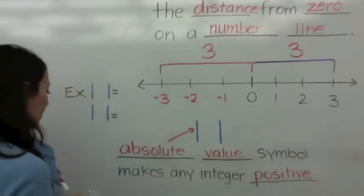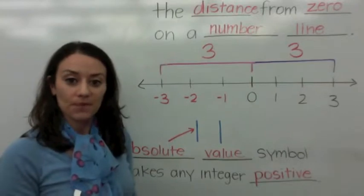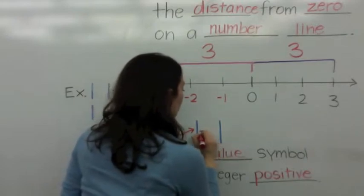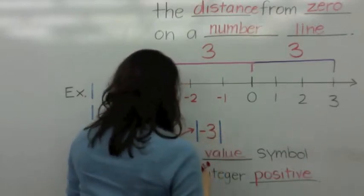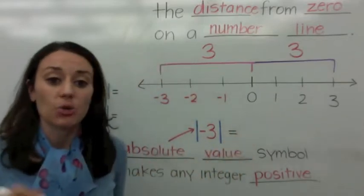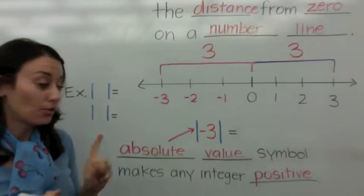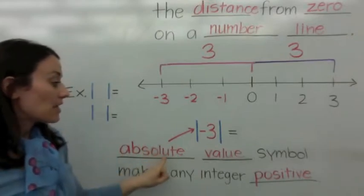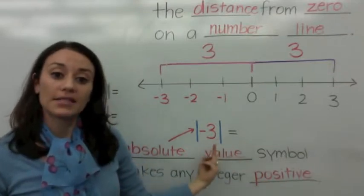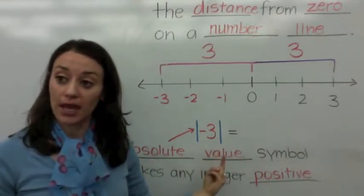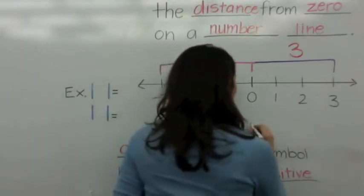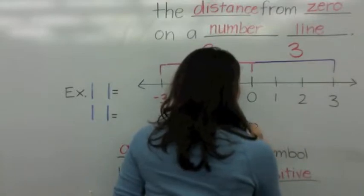So let's try an example. Let's say we're talking about the integer negative 3 with the negative 3 in the absolute value symbol. What is the absolute value of negative 3? If the absolute value symbol makes any integer positive, what is negative 3 as a positive number? It's positive 3, so I would just write it as 3.